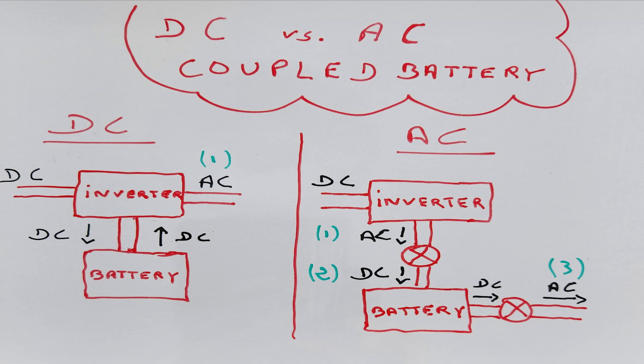The advantage of a DC-coupled battery is that it can be charged directly from the DC electricity produced by the panels, meaning when we discharge the battery there is only one conversion from DC to AC electricity. This is a totally different situation compared to AC-coupled batteries, which presents quite a disadvantage. The DC electricity from the panels is converted to AC, then converted back to DC to charge the battery, and then converted a third time to AC when discharging. This is known as the triple conversion loss penalty.